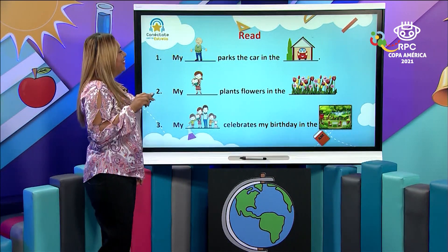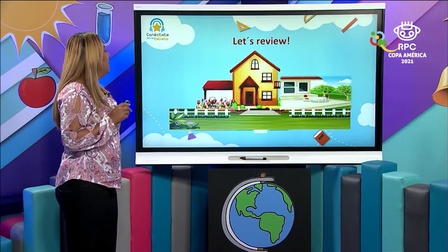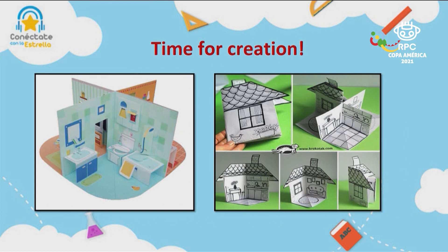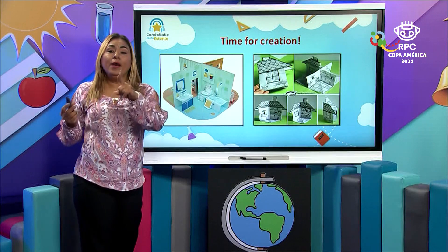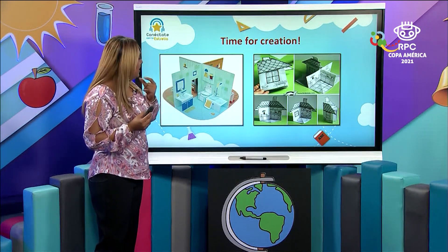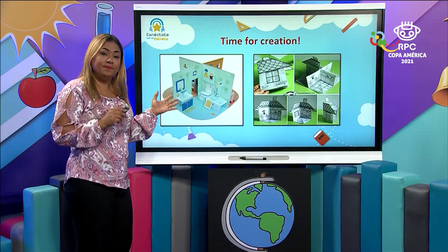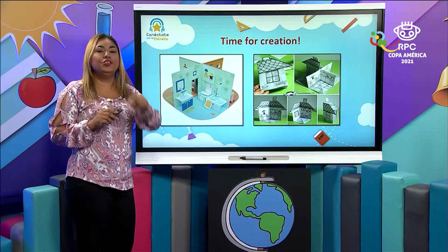Let's review once again: we have the roof, window, door, fence, yard, the garden, the garage, and the terrace. Time for creation! We have another way to make our own house just using paper and simple materials. You can use paper or cardboard, decorate using different colors and markers. You can add the external parts like the garage and the garden, and put the roof in the color that you like best. It's just your creation.